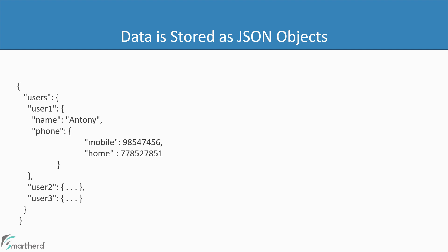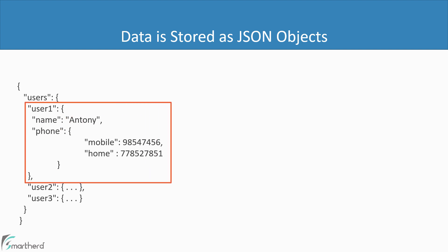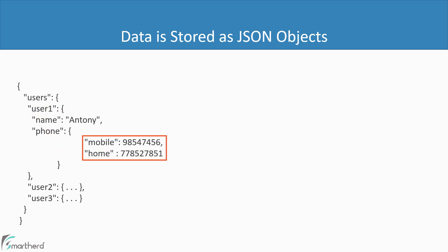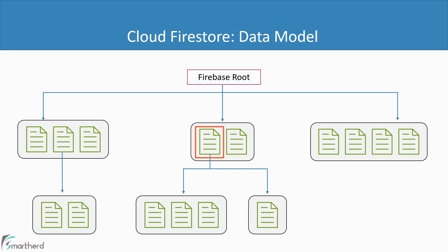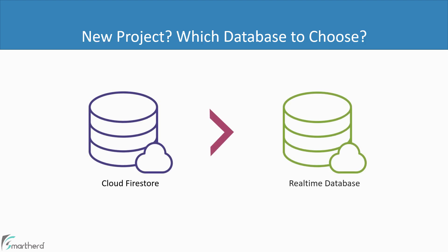One of the major disadvantages of using Real-Time Database over Cloud Firestore is that if you want to fetch a user1 object, you will get all the deeply-nested JSON objects as well — such as name, phone, mobile, home, and so on — which makes our query process quite slow if you have too many nested JSON objects. But in Firestore, if you fetch a single document, you get only that document and not all the sub-collections. This makes Cloud Firestore fast and efficient. If you are starting a new project, Google recommends giving preference to Cloud Firestore.